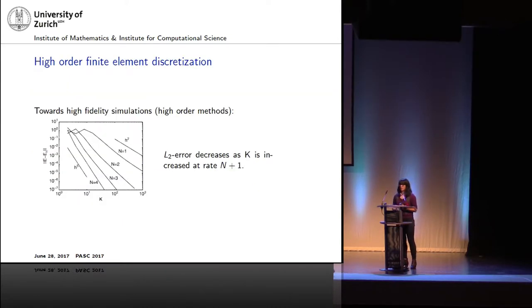Going on to these high-order finite element discretizations, the idea is that you want to converge to your solution quickly. Just a simple definition: as you increase the number of cells in your simulation, you want to attain a convergence rate which is higher than one. In the CFD community, normally a high-order method is considered when you have a convergence rate of larger than two.